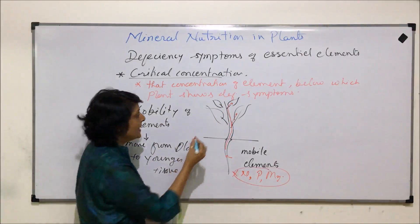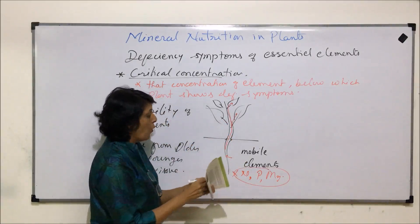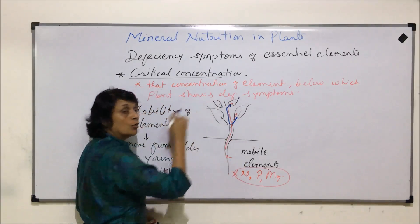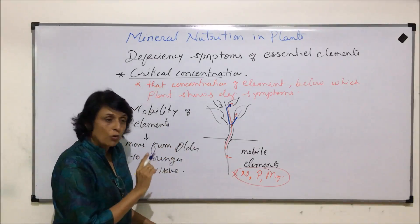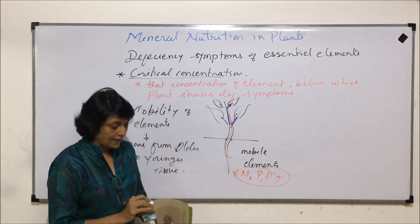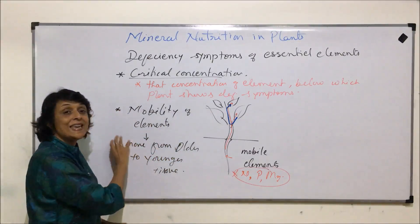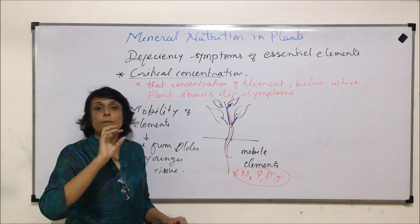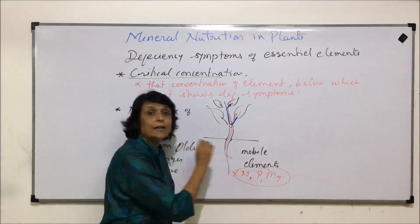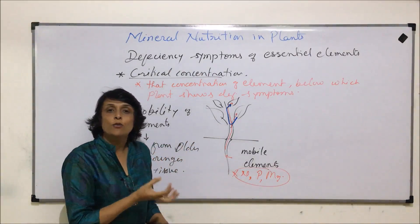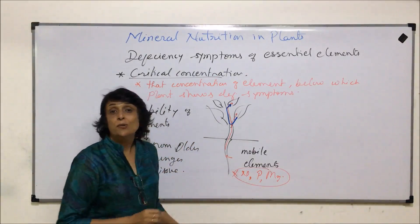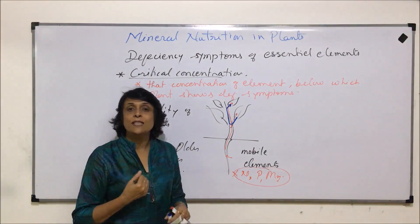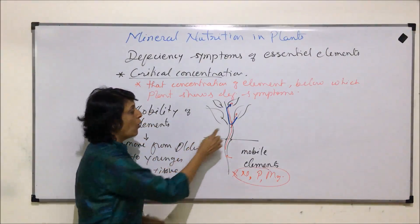Because these elements are mobile, they move from the older part of the leaf and are supplied to the younger part. Mobile elements are easily transferred from older parts to younger parts. For example, nitrogen may be part of an amino acid or protein; that amino acid or protein can dissociate to release the nitrogen, which then moves from older to younger tissue.